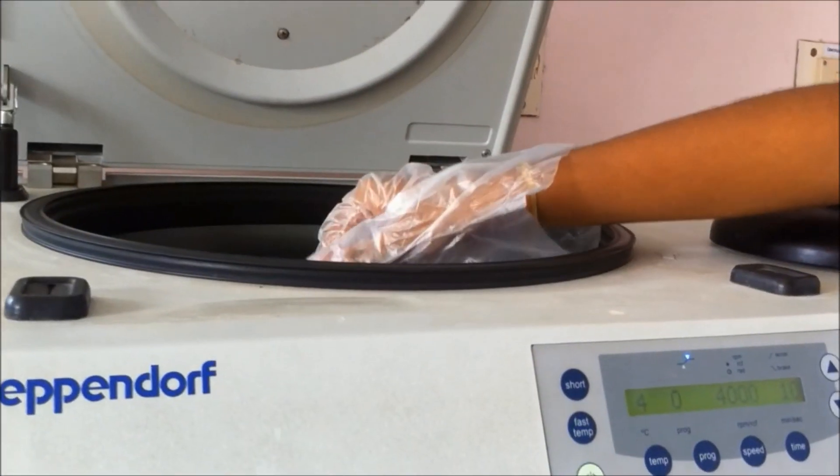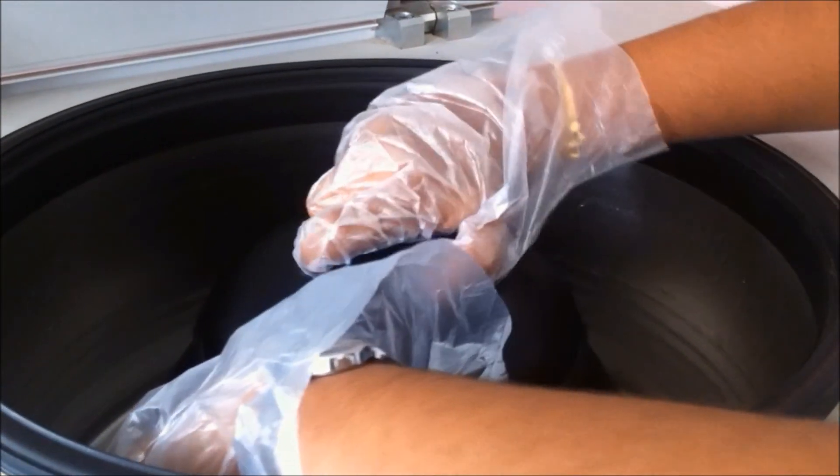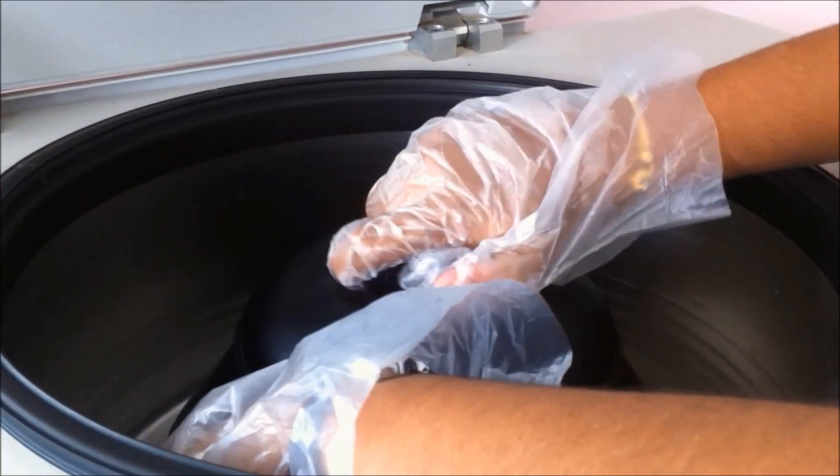Pour the bacterial cells into the microcentrifuge tube or falcon tube. Centrifuge the bacterial cells for 1 minute at 12,000 rpm, whereas in case of falcon tube centrifuge at 4,000 rpm for 3 minutes.